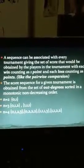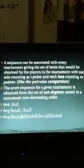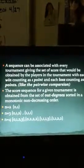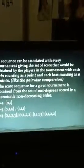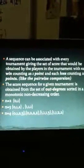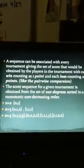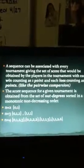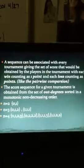A score sequence can be associated with every tournament, giving the set of scores that would be obtained by the players in a tournament where a win counts as 1 point and a loss counts as 0 points, like the pairwise comparison we did in class. The score sequence of a given tournament is obtained from the set of out-degrees sorted in monotonic non-decreasing order. For n=2 you get 0 and 1, and for n=3 you get the corresponding sequences.